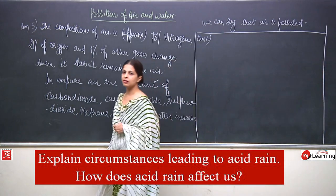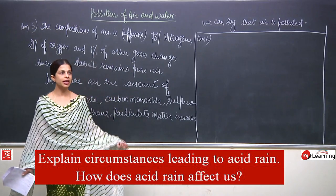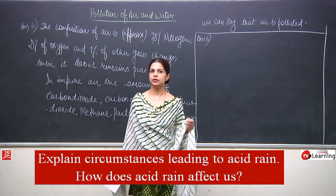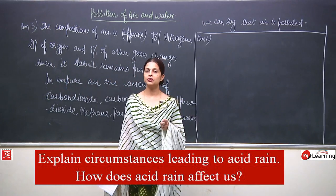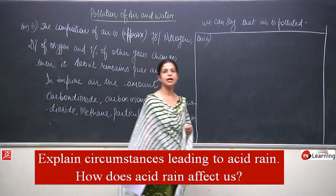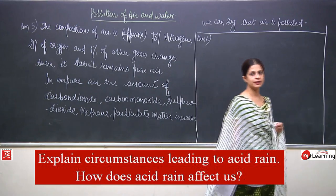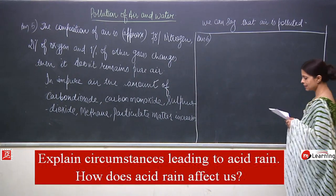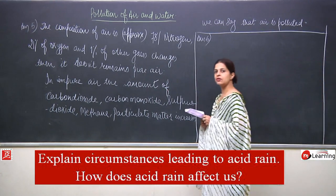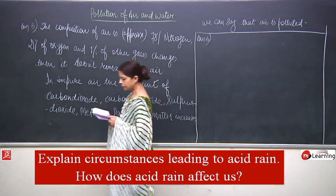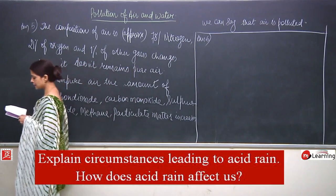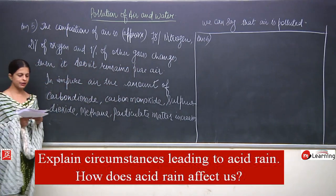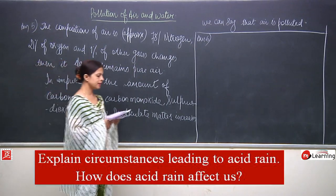Because of acid rain, many aquatic life comes to an end. We should use these kinds of fuels very carefully. Let us write the answer to question 6: explain the circumstances leading to acid rain and how does acid rain affect us.